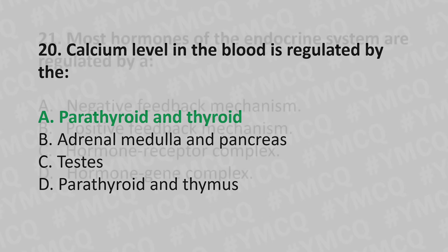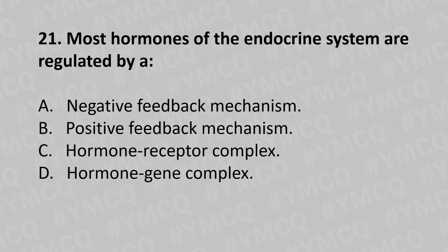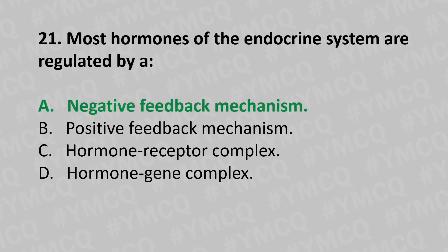Moving to our twenty-first question. Most hormones of the endocrine system are regulated by: Option A: negative feedback mechanism. Option B: positive feedback mechanism. Option C: hormone-receptor complex. Option D: hormone-gene complex. And the answer is Option A: negative feedback mechanism.